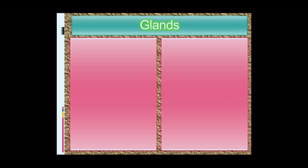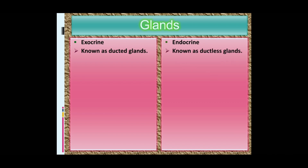Now let's see some more details about glands. Glands are of two types: exocrine glands and endocrine glands. Exocrine glands are commonly known as ducted glands, whereas endocrine glands are known as ductless glands. Ducted means having a tubular or pipe-like structure through which substances are carried to their destination, whereas ductless means without any proper passage.